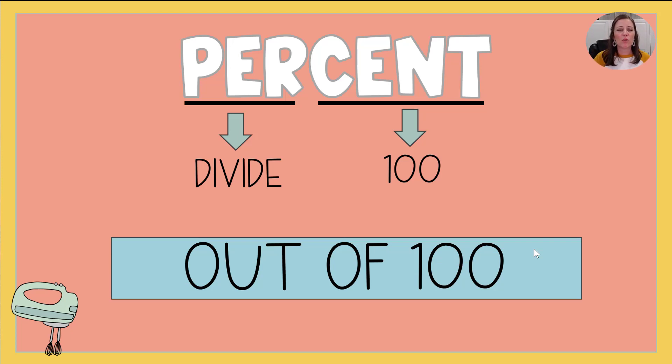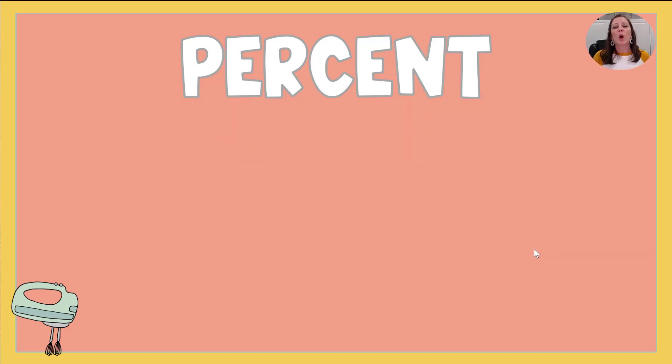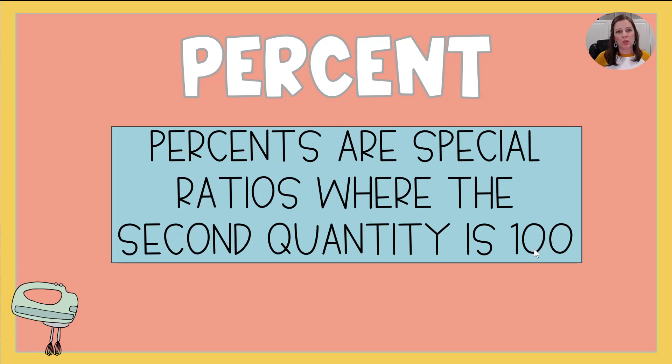Think about your grades at school. If you have a 90% on a test you made a 90 out of 100%. So we've been talking about ratios and this isn't a huge leap because percents are just special ratios where that second quantity is 100 since it means out of 100.